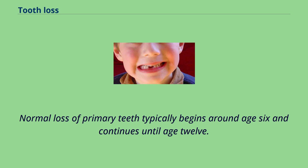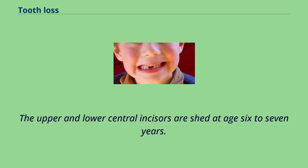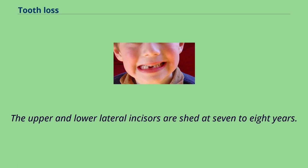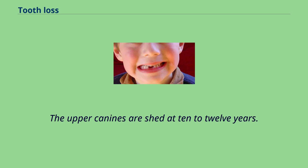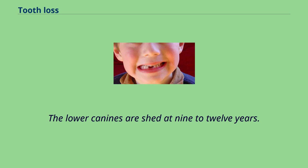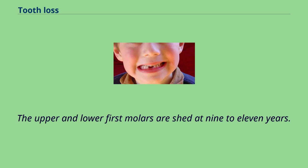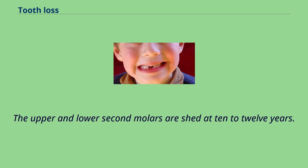Normal loss of primary teeth typically begins around age 6 and continues until age 12. The upper and lower central incisors are shed at age 6 to 7 years. The upper and lower lateral incisors are shed at 7 to 8 years. The upper canines are shed at 10 to 12 years, and the lower canines at 9 to 12 years. The upper and lower first molars are shed at 9 to 11 years, and the upper and lower second molars at 10 to 12 years.